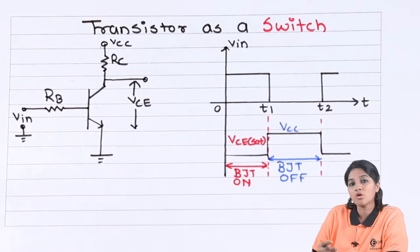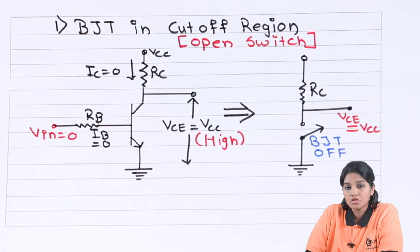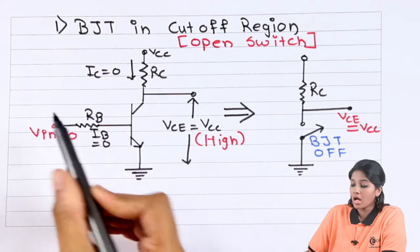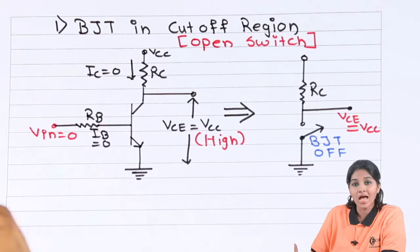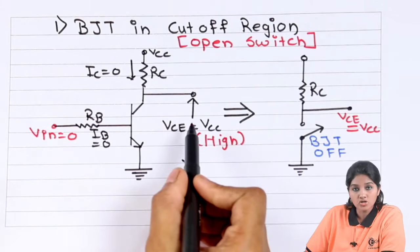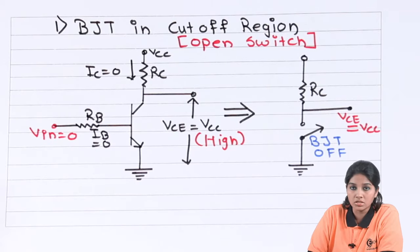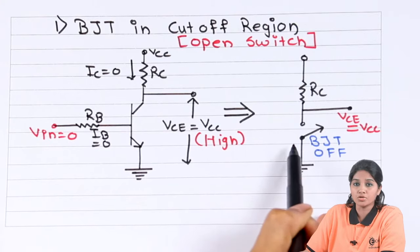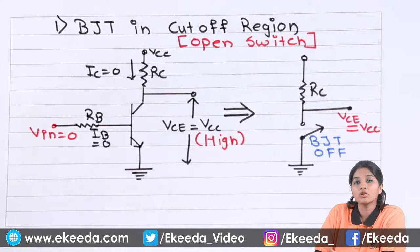Now let's see how the transistor operates as an open switch and a closed switch. Whenever the transistor operates in the cutoff region, it acts as an open switch. When input voltage is zero and the transistor operates in the cutoff region, both the base-emitter junction and the collector-emitter junction operate in reverse bias condition. In that case, the voltage drop across the collector-emitter junction is very high and approximately equal to VCC, due to which the transistor circuit is equivalent to an open switch. Therefore, whenever the transistor operates in the cutoff region, it acts as an open switch, or BJT is turned off.